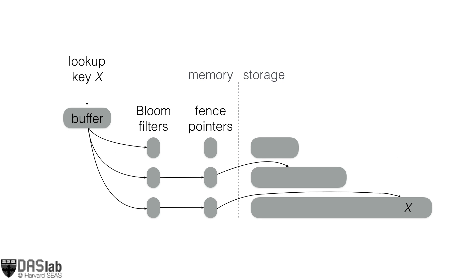To speed up search even more, key-value stores contain bloom filters in main memory, which allow us to probabilistically skip runs that do not contain the key we're looking for. In general, these bloom filters might return a true negative, which is great because that allows us to skip probing a run that does not contain the key, saving one I/O and improving performance. They might return a false positive, which is not so good for performance because we issue an I/O to a run that does not contain the key, or they might return a true positive, in which case we find the key and the lookup terminates.